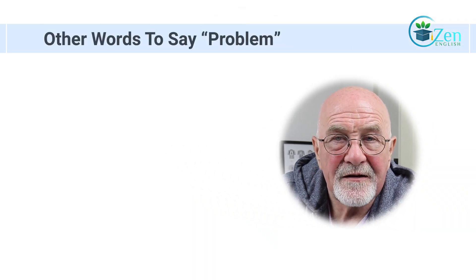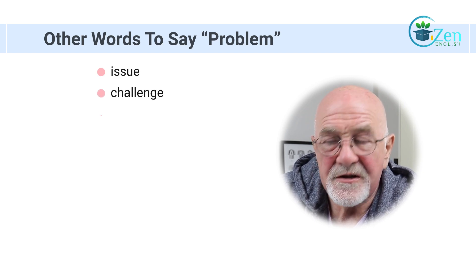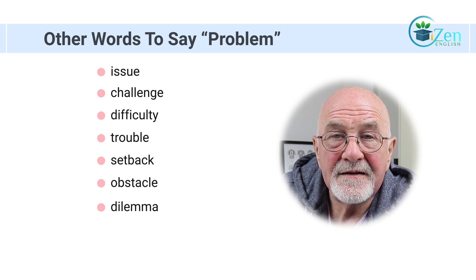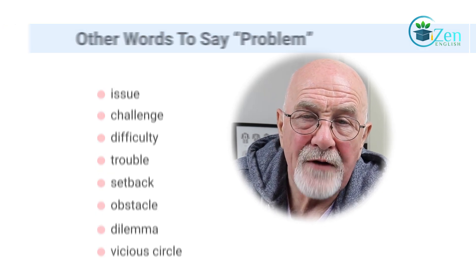So these are vocabulary words we use instead of the word problem. English words to use when you don't want to keep repeating "problem, problem, problem." I've given you eight synonyms: issue, challenge, difficulty, trouble, setback, obstacle, dilemma, and finally vicious circle. Try to practice them — they won't all be absolute certainties as synonyms, it depends on the situation. Have a practice, experiment, and try writing them out. If you have any problems, look them up in a dictionary or listen to this recording again. I really appreciate you watching and listening, and I'll catch up with you again soon.